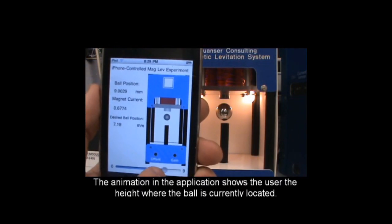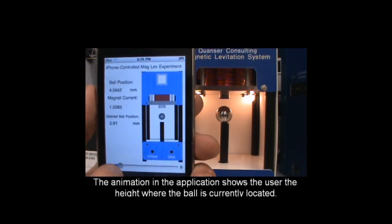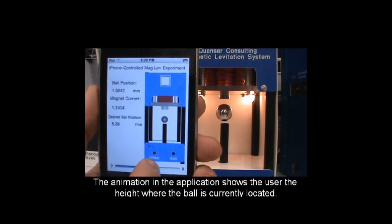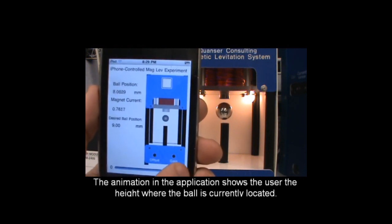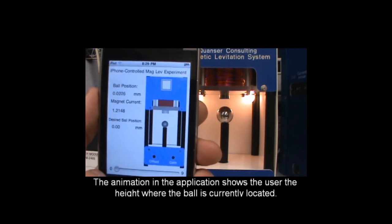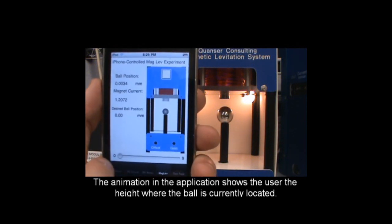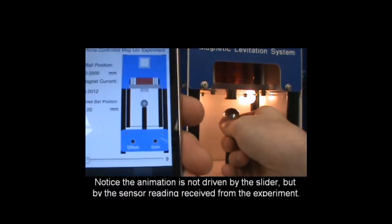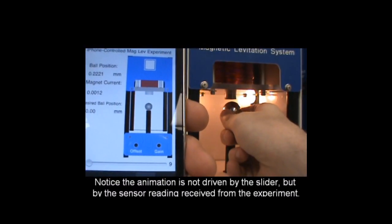In order to control this system we implement a proportional plus integral, or PI, controller for the electrical subsystem to regulate this current, as well as a proportional plus integral plus derivative, or PID, controller for the mechanical subsystem to regulate the ball's height.